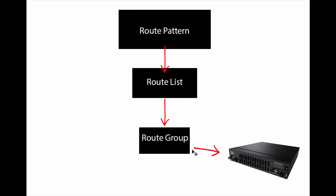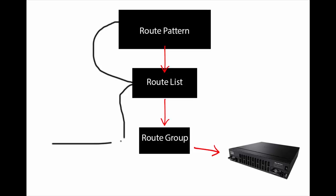As I've said before, Cisco is very hierarchical — very top to bottom, bottom to top in how they design their stuff. The way you configure this is route group to route list to route pattern. And we're going to focus on the route group first. Route groups are awesome — they're the backbone of this.